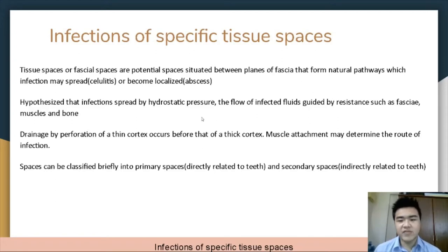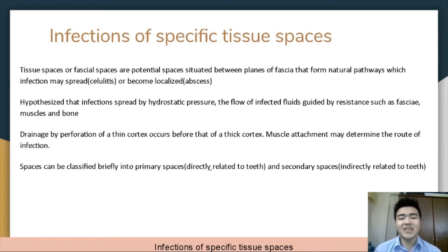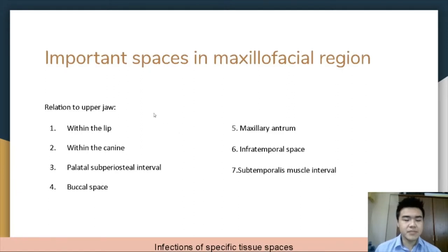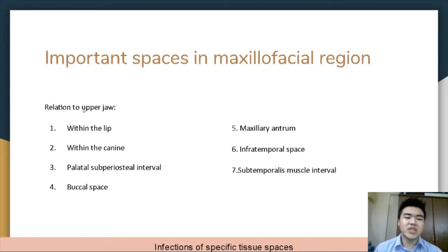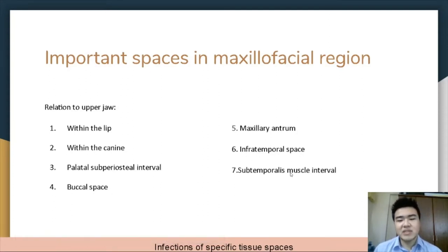Drainage by perforation of a thin cortex occurs before that of a thick cortex. Muscle attachments may also determine the route of these infections. Spaces can be classified into primary spaces, which are directly related to the teeth, and secondary spaces, which are indirectly related to the teeth. The important spaces in the maxillofacial region in relation to the upper jaw are: within the lip, within the canine, palatal subperiosteal interval, the buccal space, maxillary antrum, infratemporal space, and the subtemporal muscle interval.